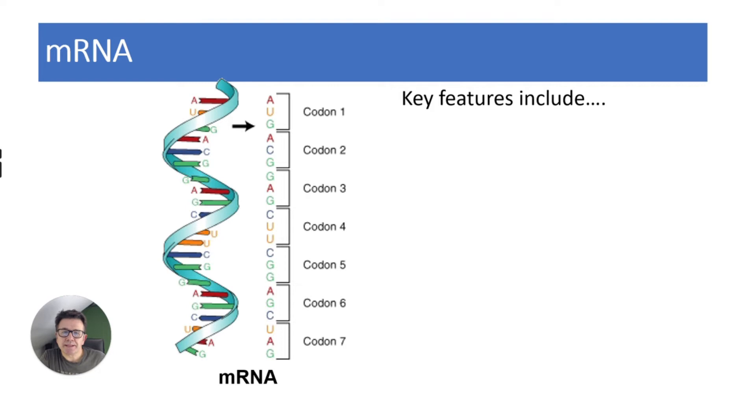mRNA is produced as part of the transcription process of protein synthesis. That's where a copy of the DNA code is made. The key features include: one, it is single-stranded; secondly, it's found in the nucleus. It's actually made in the nucleus when it transcribes the genetic code, then it travels through a nuclear pore into the cytoplasm and to a ribosome.